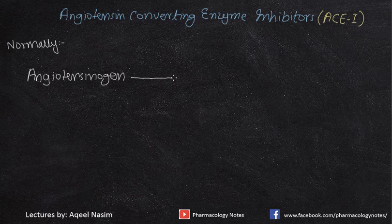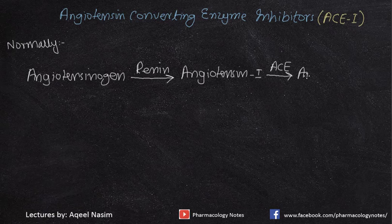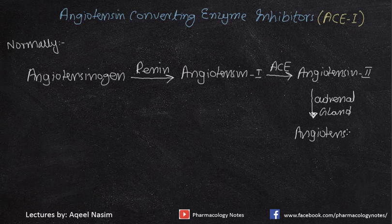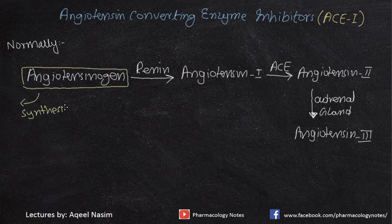The normal physiology or the normal process in the body takes place something like this. Consider this flowchart: we have angiotensinogen, which is converted into angiotensin 1 by the enzyme renin. Then angiotensin 1 is converted into angiotensin 2 by the enzyme ACE — angiotensin converting enzyme. Then angiotensin 2, with the help of the adrenal gland, is converted into angiotensin 3.